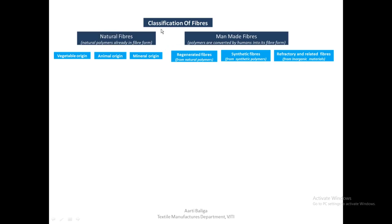Natural fibers can be obtained from a variety of sources: vegetable origin, animal origin, or mineral origin. Manmade fibers can be classified as regenerated fibers, which come from natural polymers; synthetic fibers, which come from synthetic polymers; or refractory and related fibers from inorganic materials.